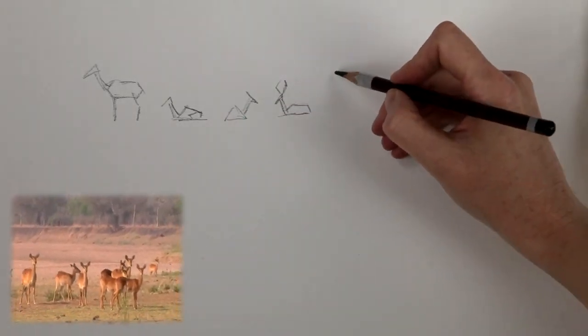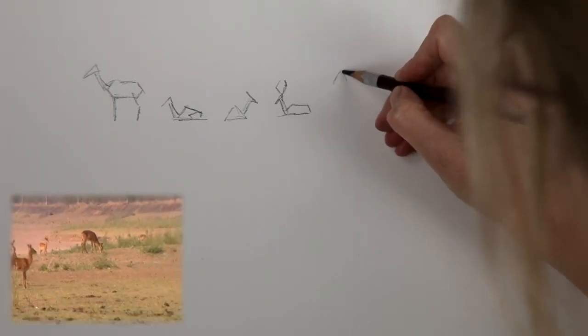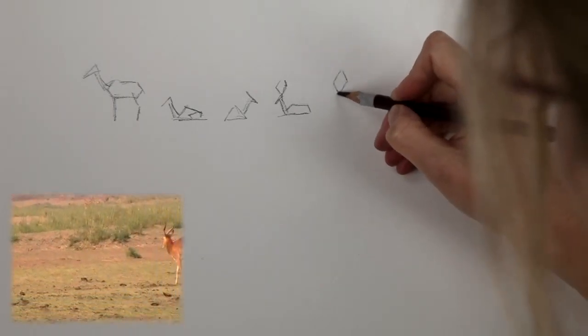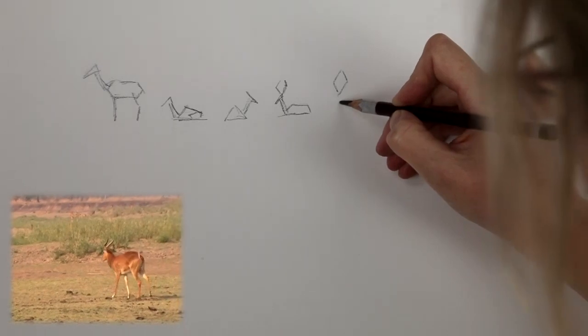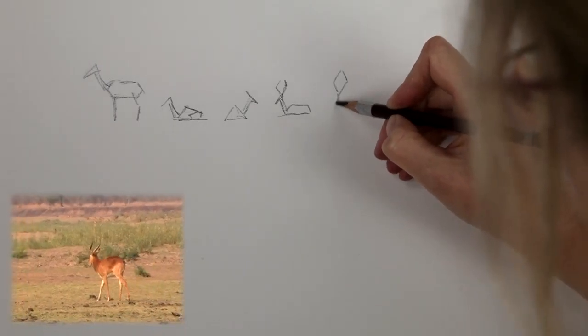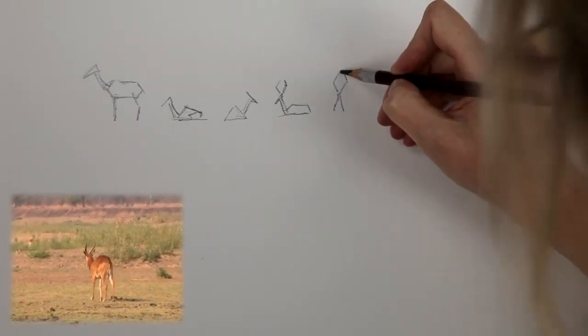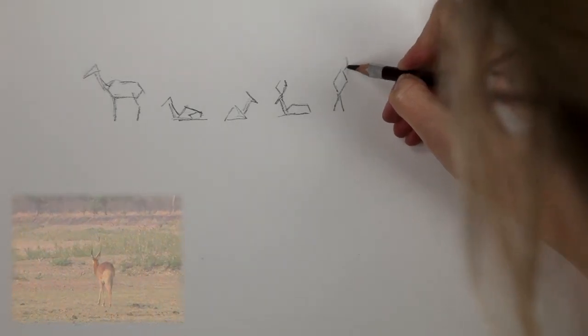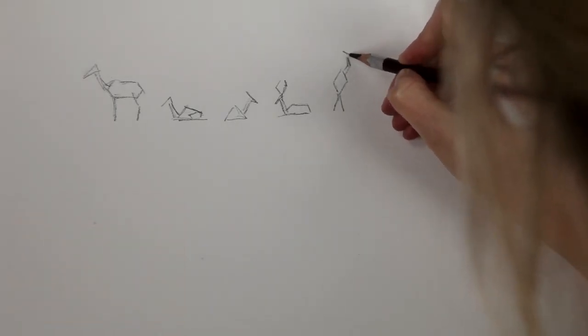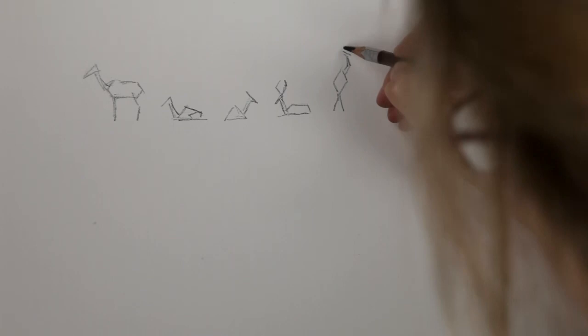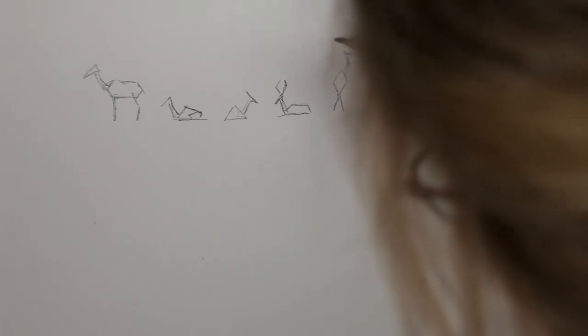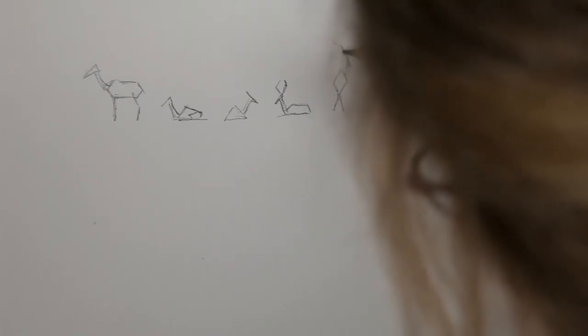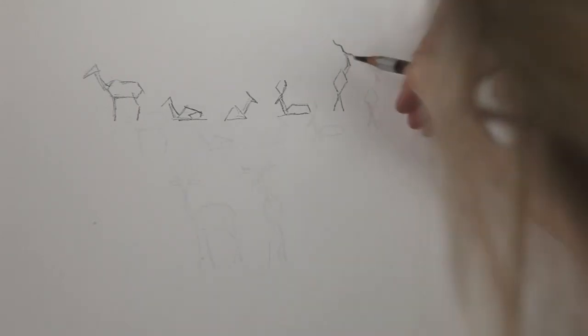So I'll do a few more standing up. Just look at the various different shapes that the animal is making. Which way are the horns going to go? Horns might be the exception to the straight line rule.